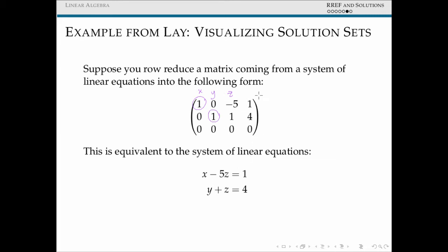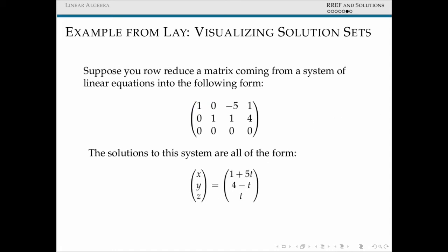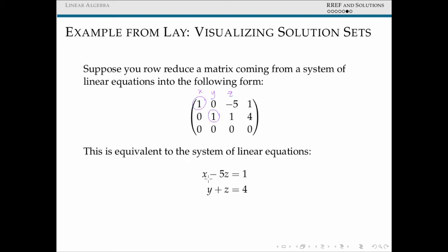So we can convert this reduced matrix into the system of linear equations x - 5z = 1 and y + z = 4. So some quick algebra converts those into all solutions to this system, so x - 5z is 1, y + z is 4. That gives us that x is equal to 1 + 5z. For whatever value of z we choose, y is equal to 4 - z.